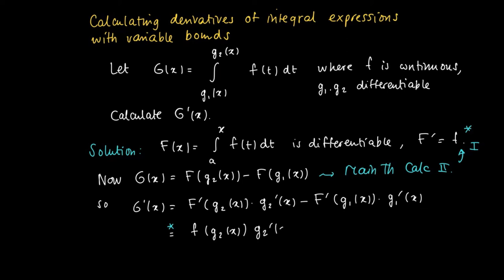So we get f of g2 x times g2 prime of x minus the function evaluated in g1 x times g1 prime of x.